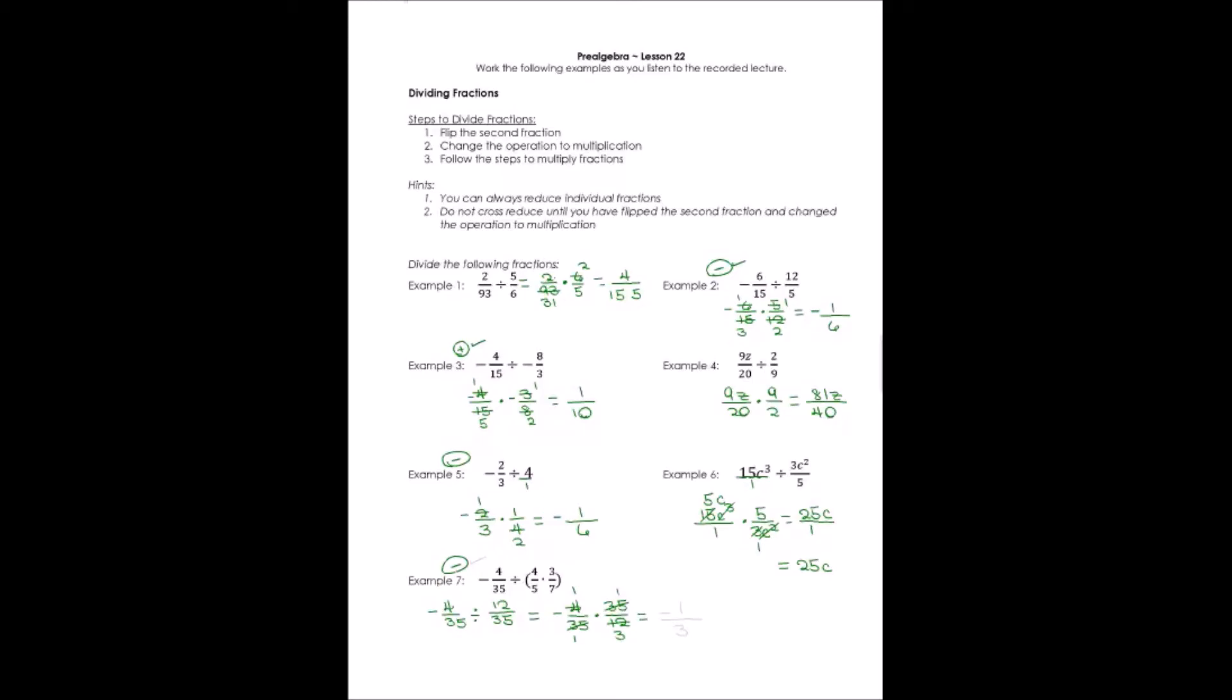Don't forget my negative out here. -1 times 1 is -1. The denominator, 1 times 3 is 3. The answer, I said it would be negative, it is. It's negative 1/3.